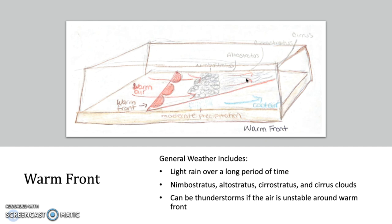Next we have a warm front. As you can see in the drawing, there are multiple cloud types that occur with warm fronts — usually nimbostratus, altostratus, stratus, and cirrus. The weather usually includes light rain over a long period of time. There can also be thunderstorms if the air is unstable enough around the warm front.